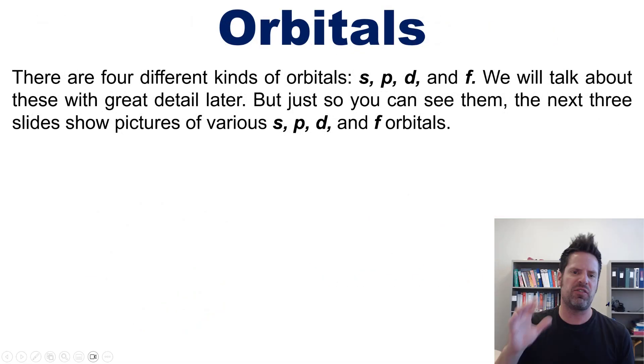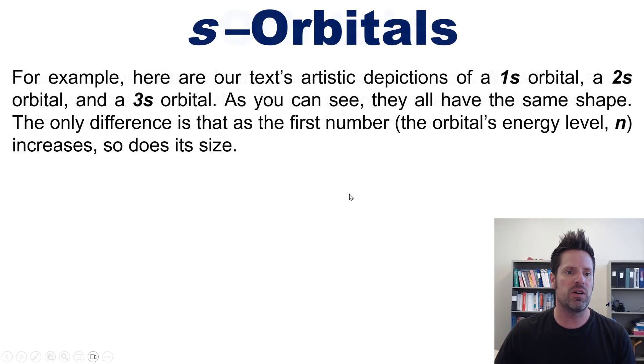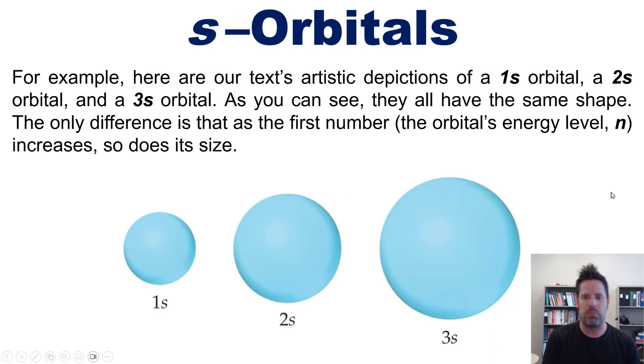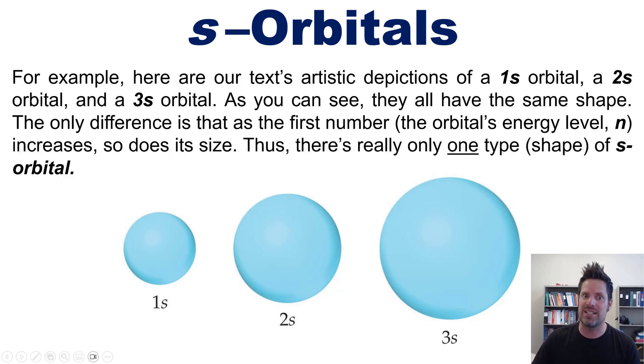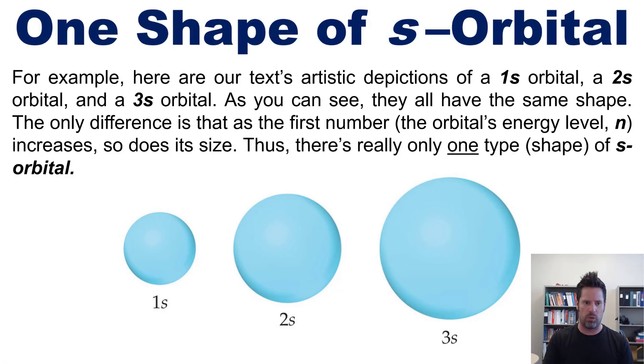Now, as it turns out, there are four different kinds of orbitals: s, p, d, and f. We will talk about each of these in greater detail later on in this video. But just so you can see them, the next three slides show pictures of various s, p, d, and f orbitals. For example, here are our text's artistic depictions of a 1s orbital, a 2s orbital, and a 3s orbital. Now as you can see, they all have the exact same shape. They're all spheres. The only difference is that, as the first number of the orbital's energy level n increases from 1 to 2 to 3, so does the orbital's size. Thus, there really is only one type or shape of s orbital, a sphere.